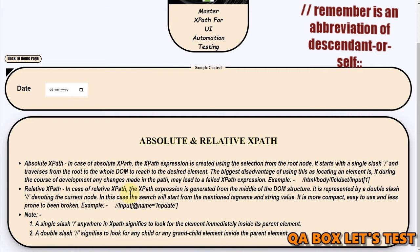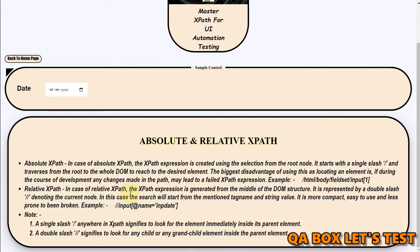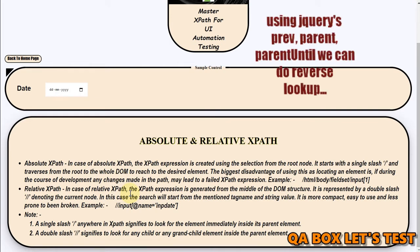Now in XPath, you can go forward and you can also go back, which is the limitation of CSS. In CSS, you can always go forward. So going back is called reverse lookup, and that is possible in XPath. That's the advantage of XPath.